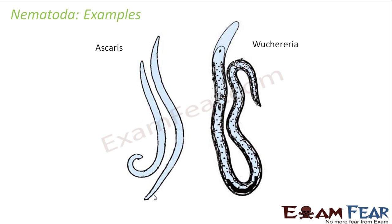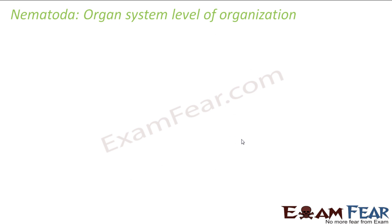Let us look at some examples of nematodes. Ascaris and Wuchereria are some examples. You can see there is no segmentation on their body, but there are some dot-like structures visible — these are nothing but the spine-like structures on the cuticle.